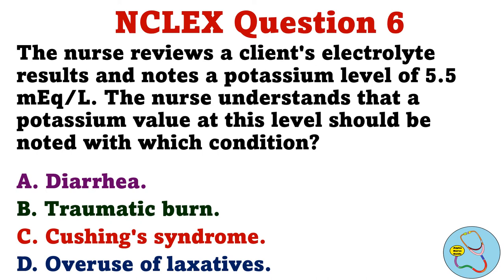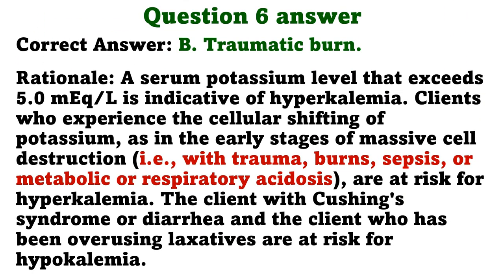Question 6. The nurse reviews a client's electrolyte results and notes a potassium level of 5.5 mEq/L. The nurse understands that a potassium value at this level should be noted with which condition? A. Diarrhea. B. Traumatic burn. C. Cushing's syndrome. D. Overuse of laxatives. The correct answer is B. Traumatic burn. Rationale. A serum potassium level that exceeds 5.0 mEq/L is indicative of hyperkalemia. Clients who experience cellular shifting of potassium, as in the early stages of massive cell destruction, are at risk for hyperkalemia. The client with Cushing's syndrome, diarrhea, or who has been overusing laxatives is at risk for hypokalemia.